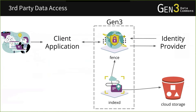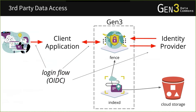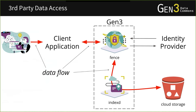Now let's look at the architecture for data access in Gen3 services. A user operating through a client application — maybe Kids First or another web application for analytics — goes through the identity provider flow through Fence. Now the user is logged in and we've determined what access they have. After this, we want to actually serve data. Now that we know who the user is, we can return data to the client on behalf of the user. This second half of the flow depends on IndexD.